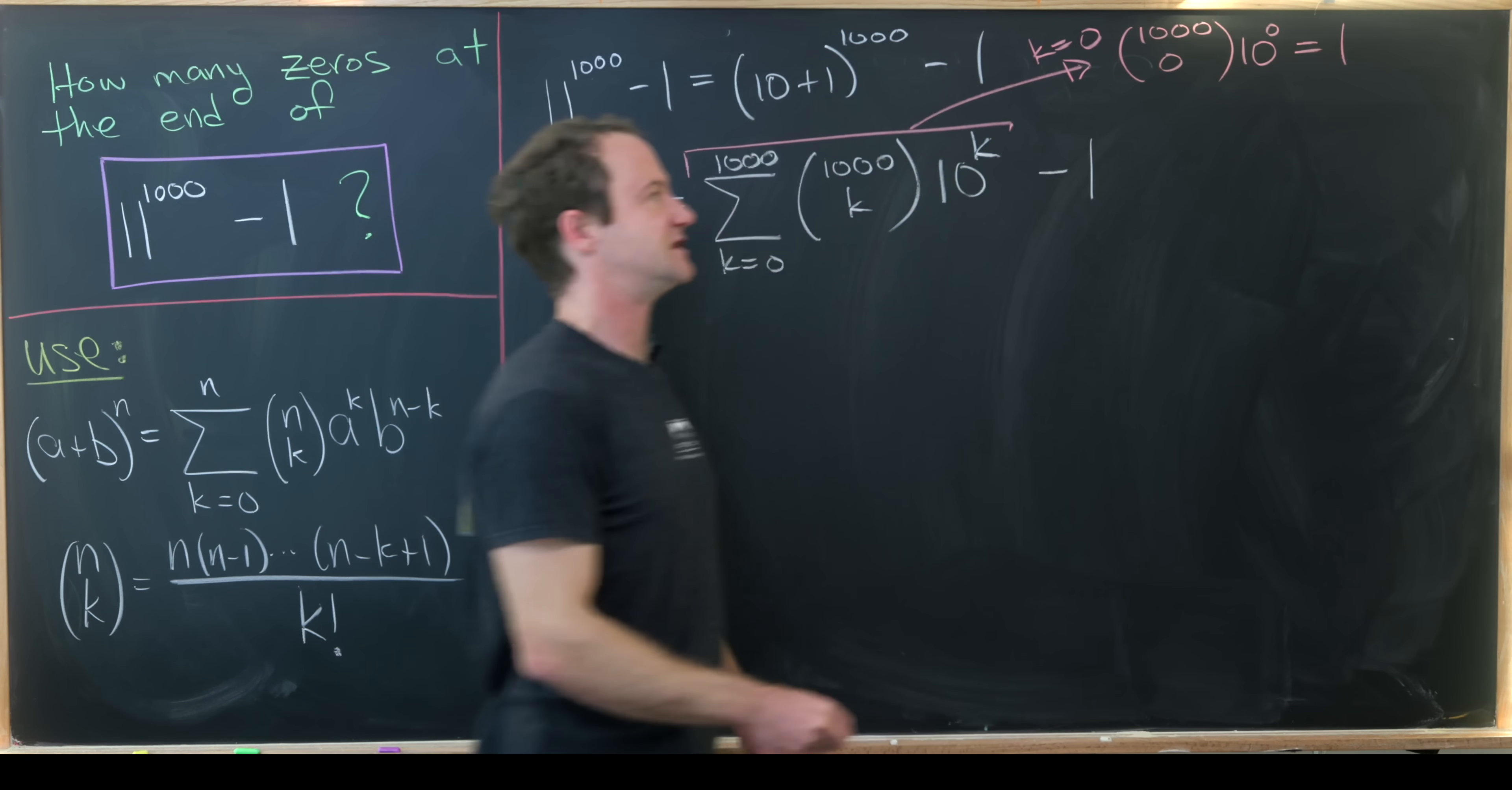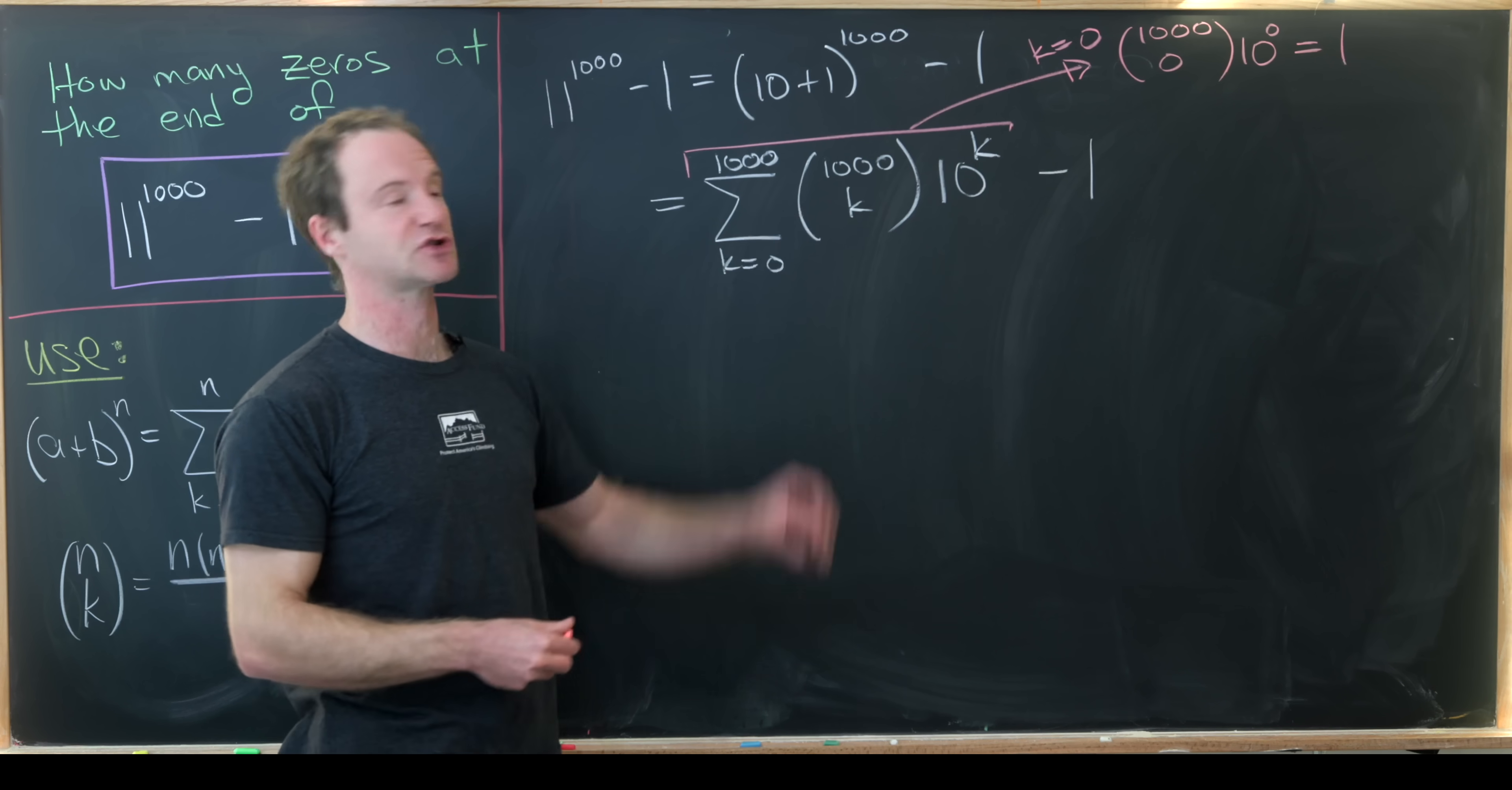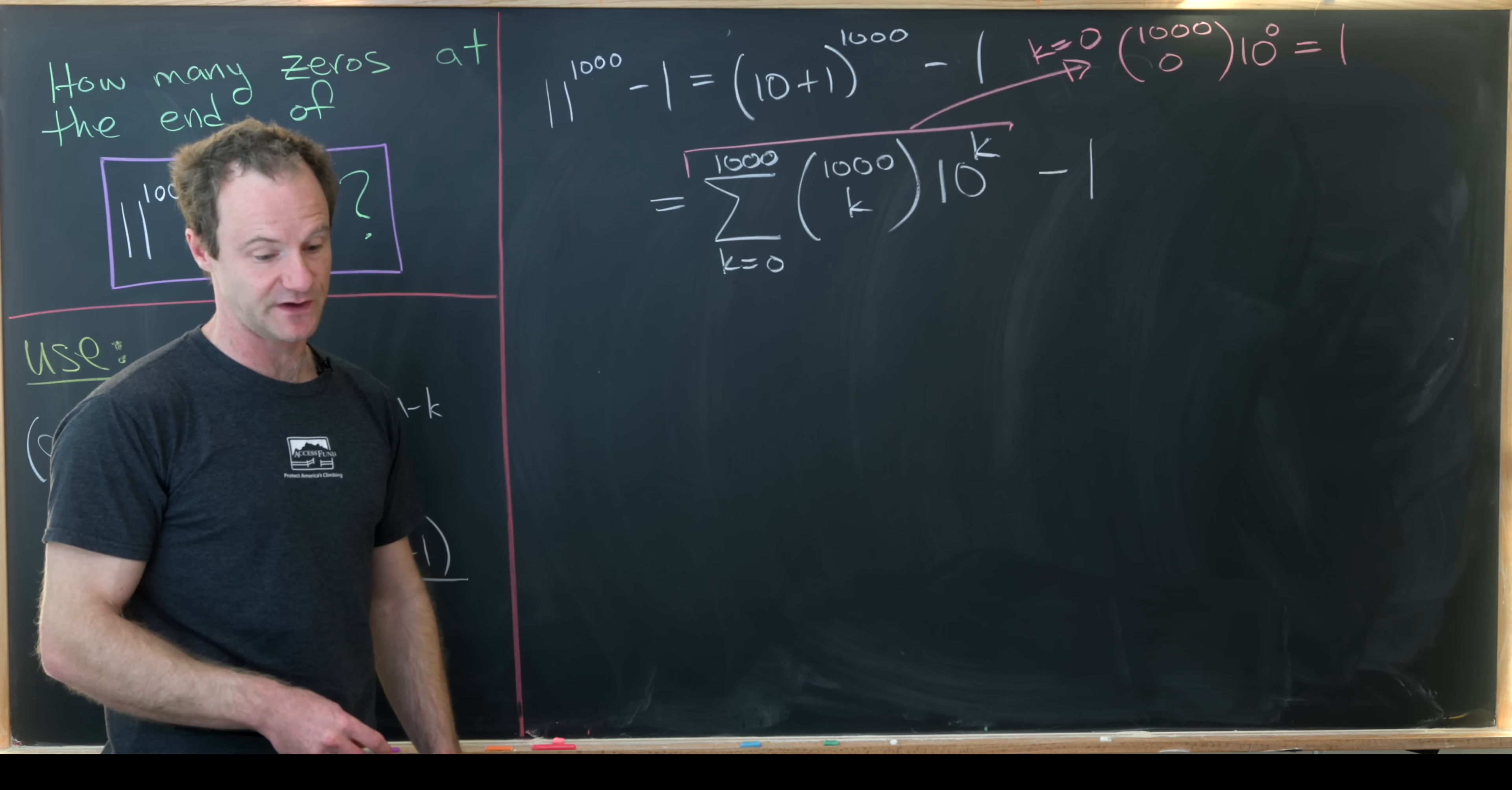But 1,000 choose 0 is 1 and 10 to the 0 is also 1. So that means the zeroth term here is equal to 1. Well we're subtracting 1 so that in fact cancels. And so what we'll really have is just the sum as k goes from 1 to 1,000.